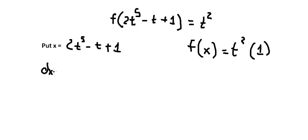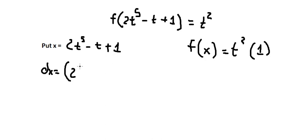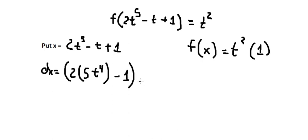Now we need to do the first derivative for both sides. The derivative of t to the power of 5 gives us 5t to the power of 4. After taking the first derivative of this side, we get dt. So 2 multiplied by 5 gives us 10.